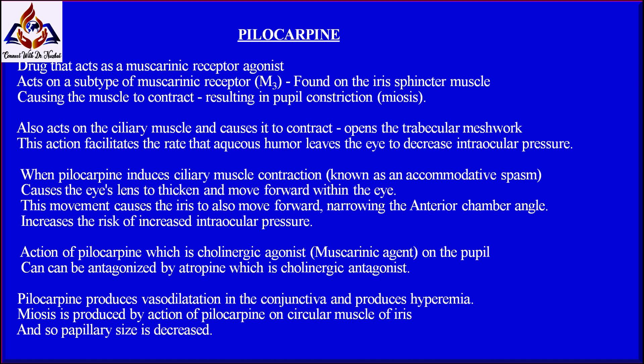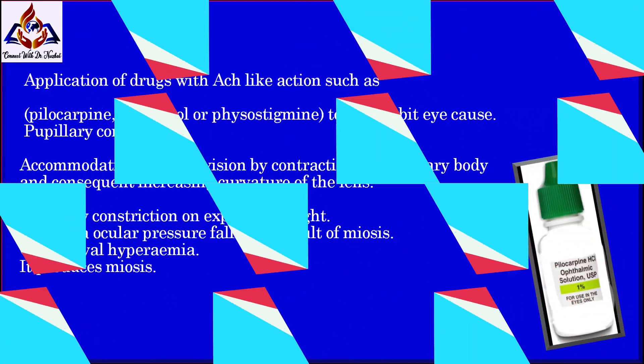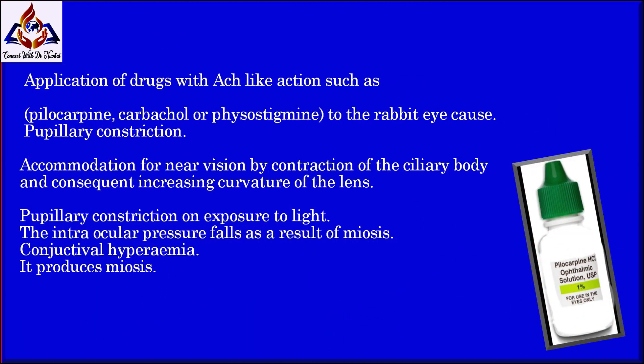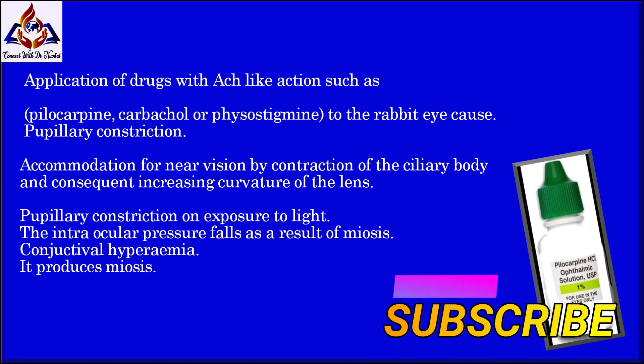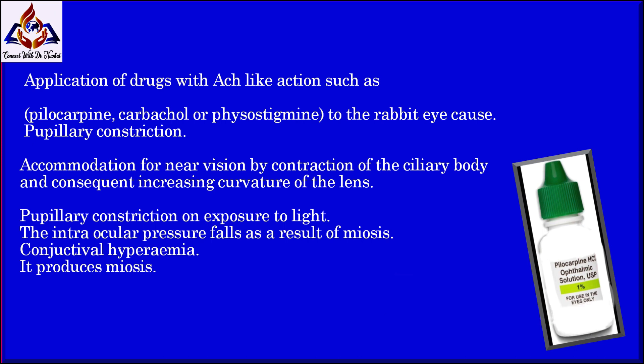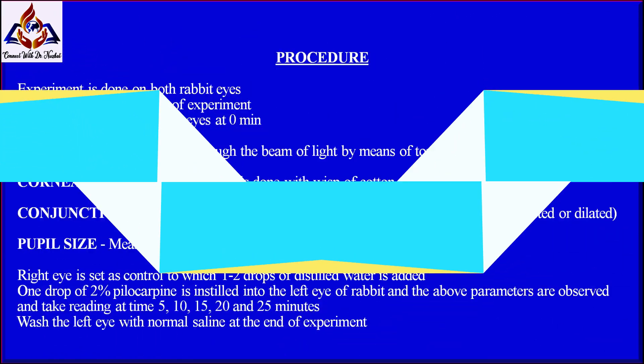This action of pilocarpine as a cholinergic agonist (muscarinic agent) on the pupil and on accommodation can be antagonized by atropine, a cholinergic antagonist. Pilocarpine produces vasodilation in the conjunctiva and produces hyperemia. Miosis is produced by the action of pilocarpine on the circular muscle of the iris, decreasing pupillary size. Application of drugs with acetylcholine-like action — such as pilocarpine, carbachol, or physostigmine — causes pupillary constriction, accommodation for near vision, and a fall in intraocular pressure, as well as conjunctival hyperemia.